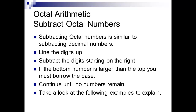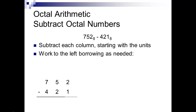Let's go on to octal. Subtracting octal numbers is the exact same thing we just did, except we're dealing with base 8. Let's do 752 minus 421. We take 2 minus 1 — that's just 1. 5 minus 2 is 3. 7 minus 4 is also 3. Without borrowing it's pretty straightforward, just like regular math. But if a number below is higher than the number above, you're going to have to borrow.